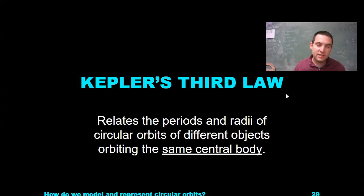His second law says that it will take an equal amount of time to pass through one part of the orbit as it does the other part. Basically, you're going to be moving faster as you're closer to the center of mass, the star that you're orbiting. And then now on to Kepler's third law, which relates the periods and radii of circular orbits of different objects orbiting the same central body.